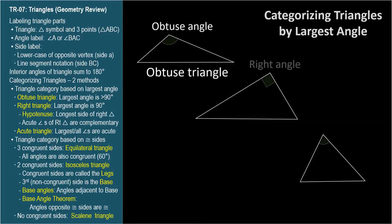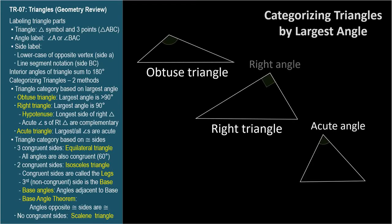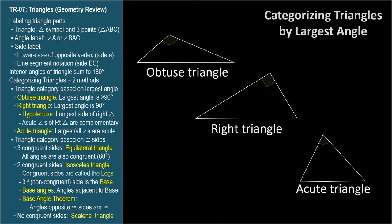When the largest angle is a right angle, it's a right triangle, which we covered in TR-02. The other two angles will be acute. When the largest angle in a triangle is acute — in which case all three angles will be acute — it's an acute triangle. Every triangle is either obtuse, right, or acute.